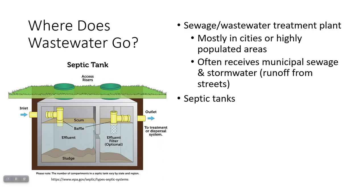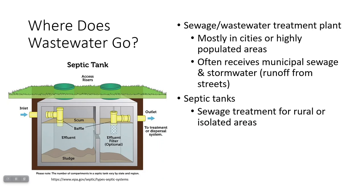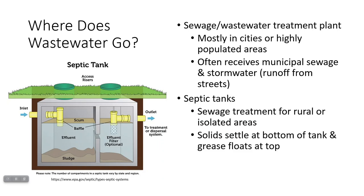If you're in the country or a more isolated area far from a sewage treatment plant, you may have a septic tank, which usually serves one home. It basically allows wastewater from the home to settle — like a settling tank — and solids will sink to the bottom and form something called sludge, while the greasy stuff will float to the top and form something called scum.